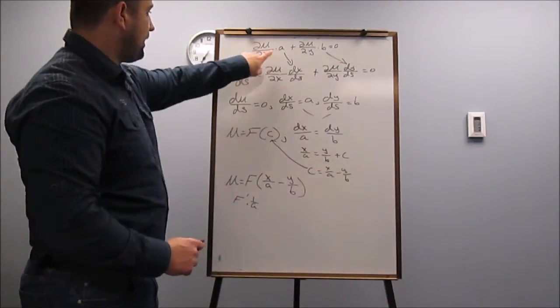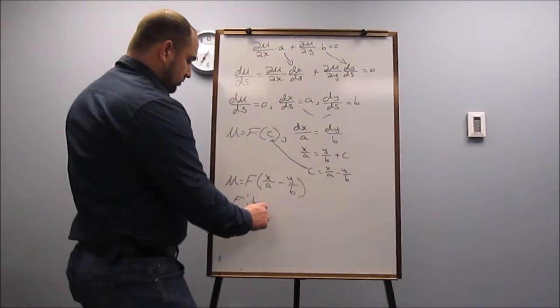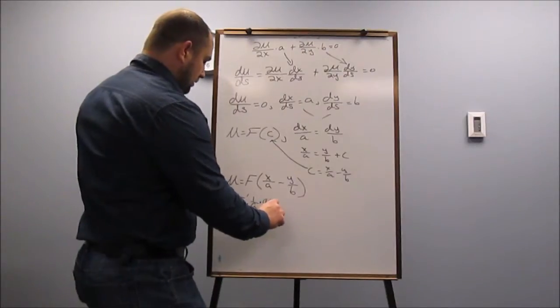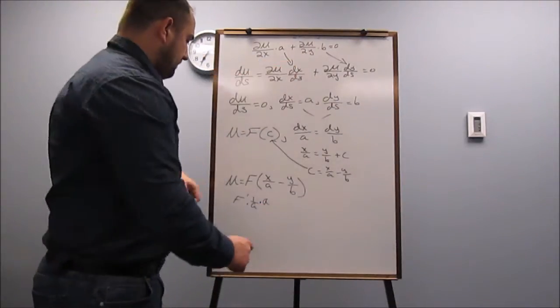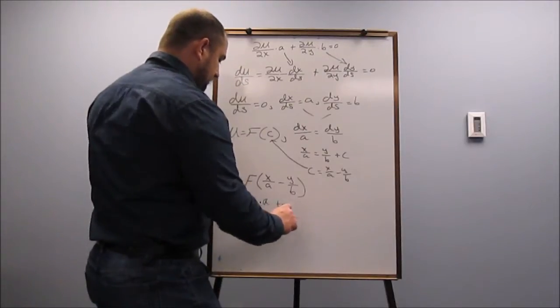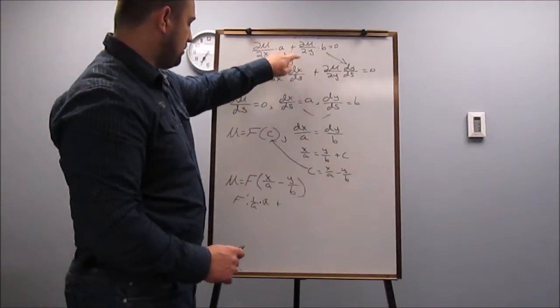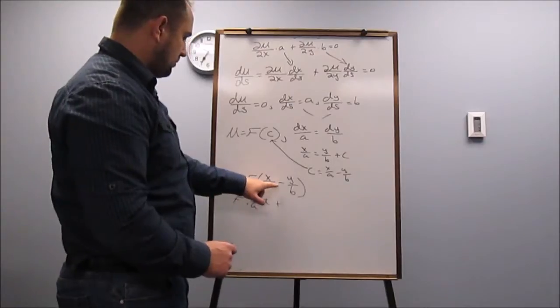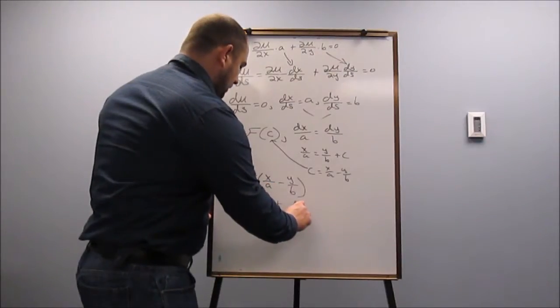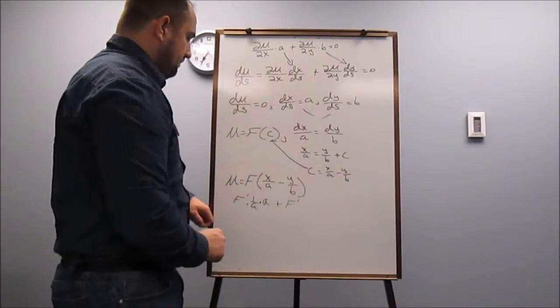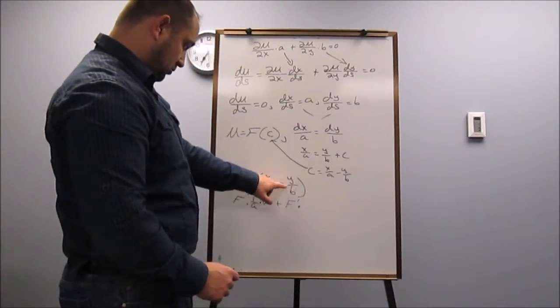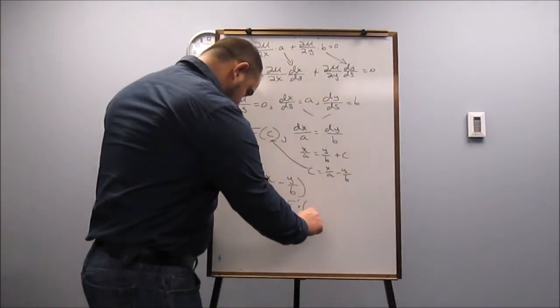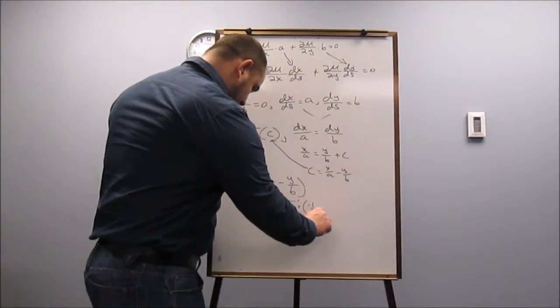Now I also have an A up here, so I have to multiply by A. Now let's go to this term here, so I'm going to have a plus partial U partial Y is going to give me F prime again, but now I have to differentiate with respect to Y, which gives me negative 1 over B,